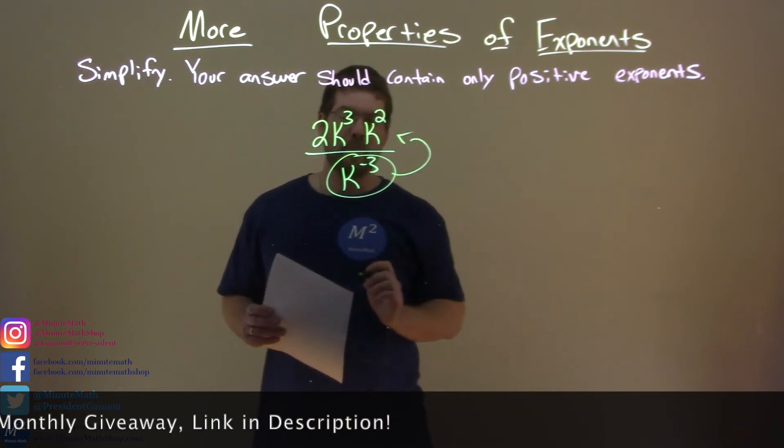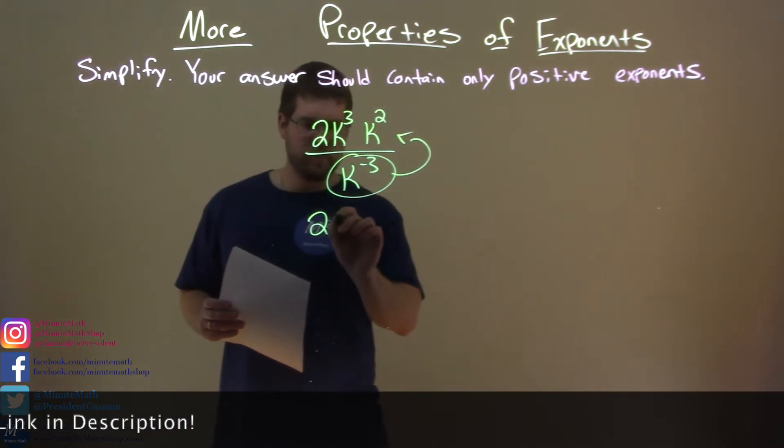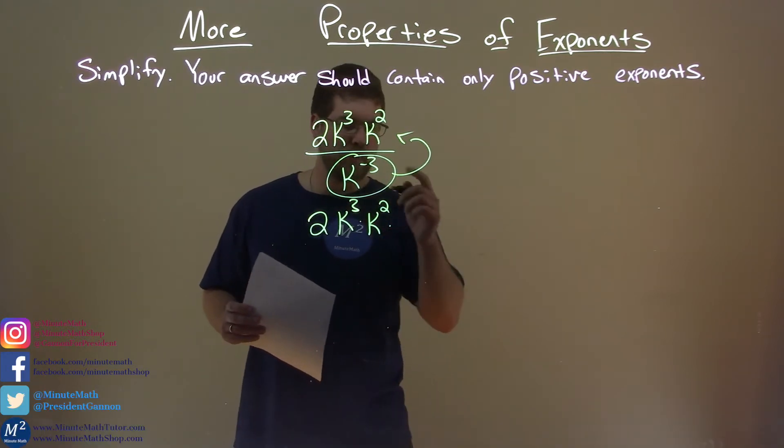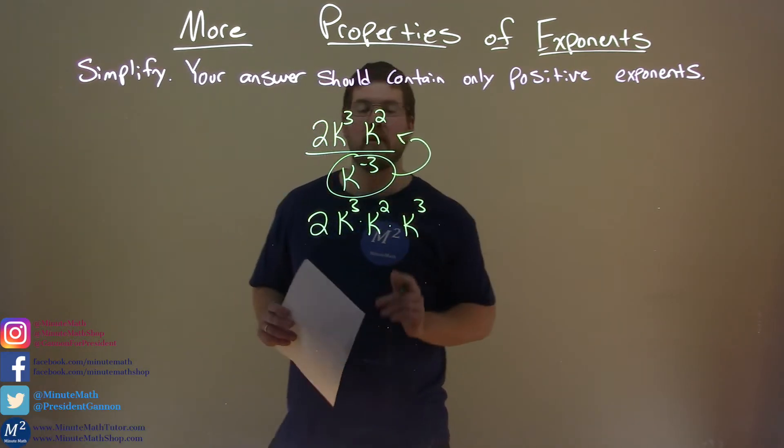So we're going to take this and bring it to the numerator. So we have 2k to the third, k squared, and then we're going to multiply that by bringing up k to the positive third power.